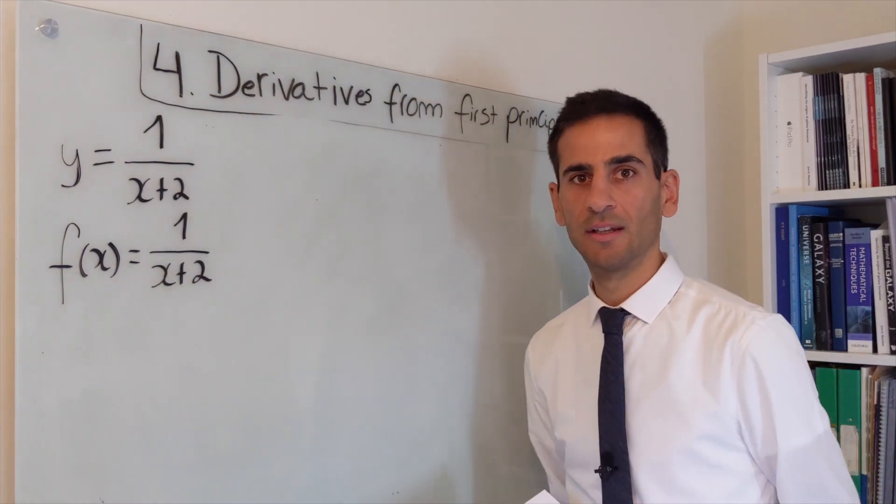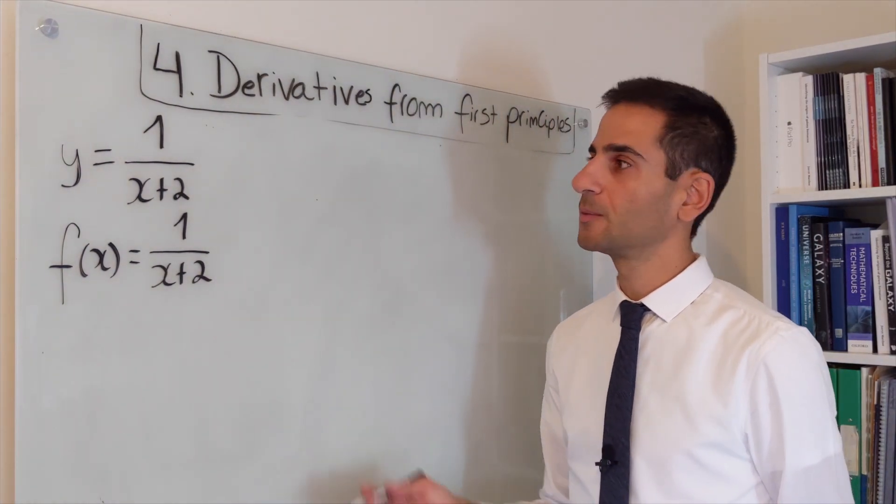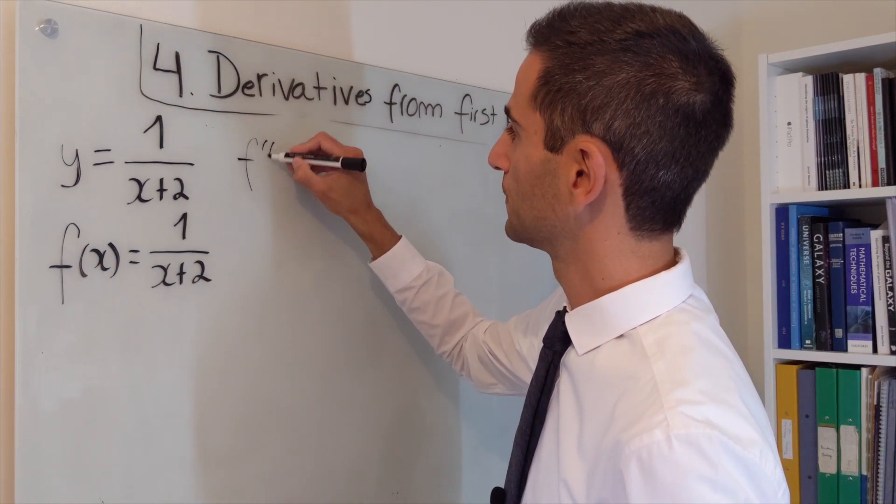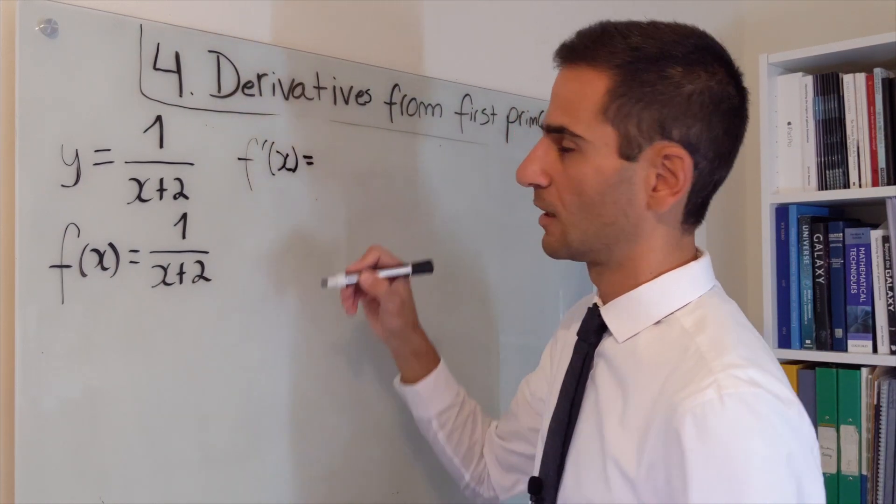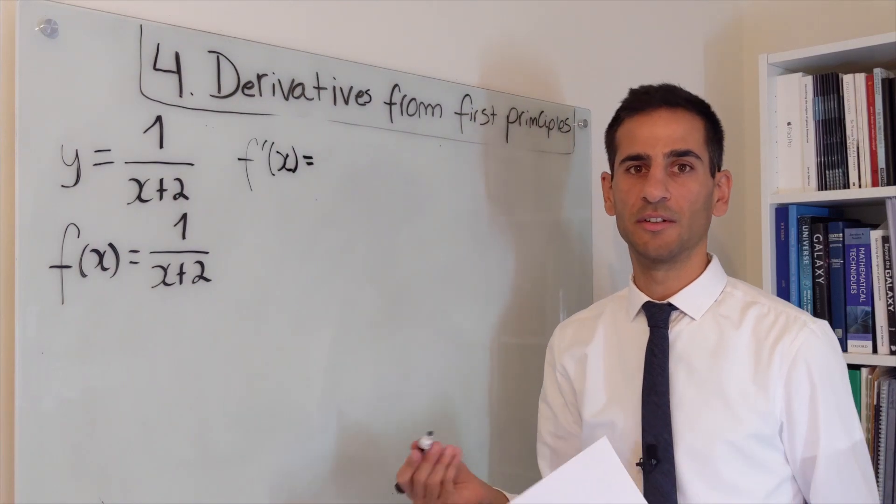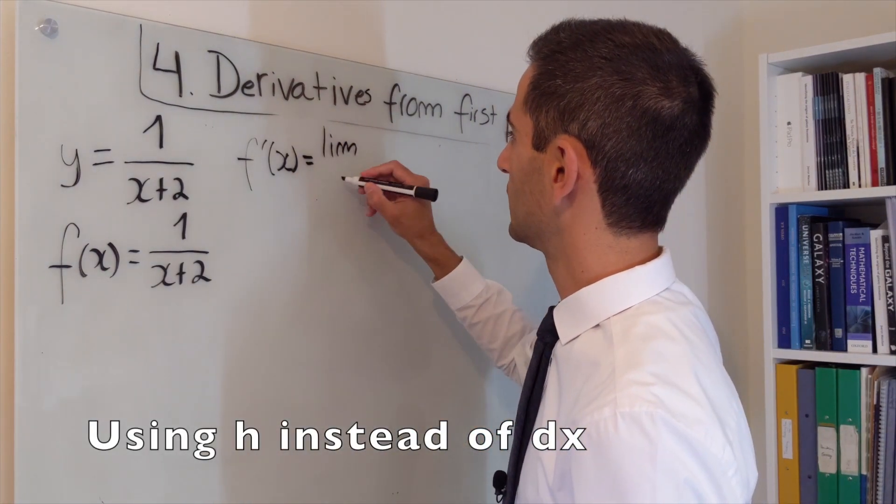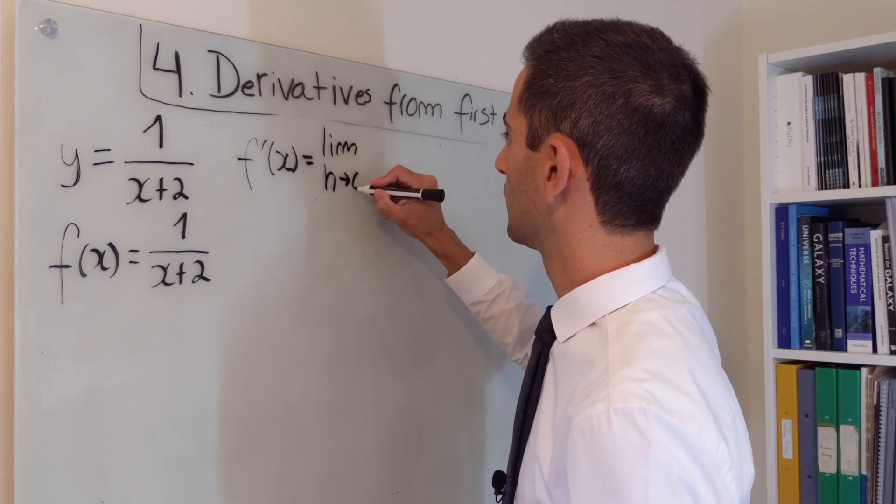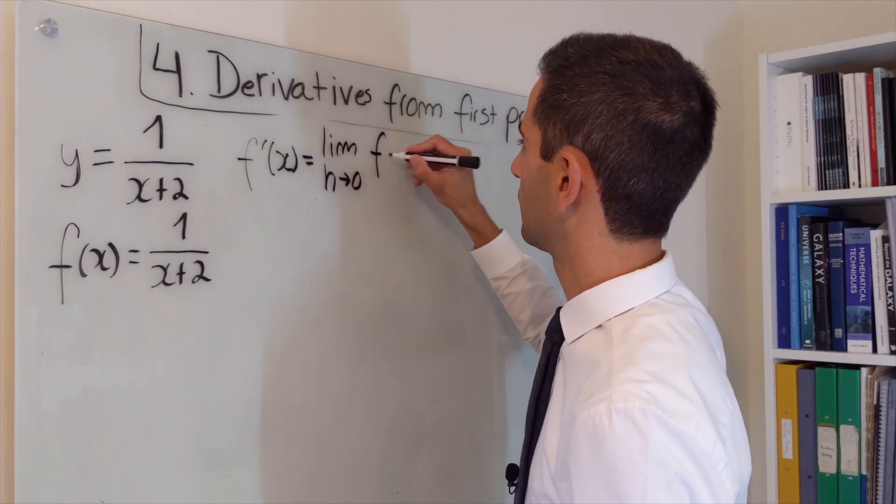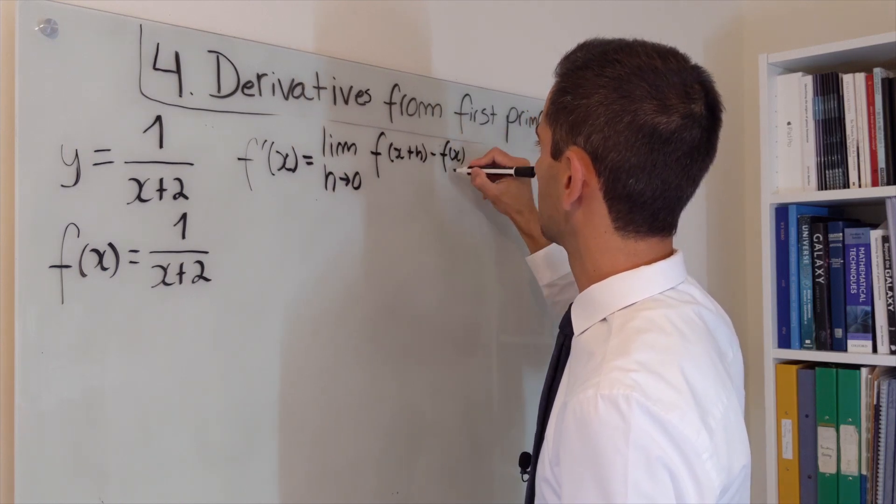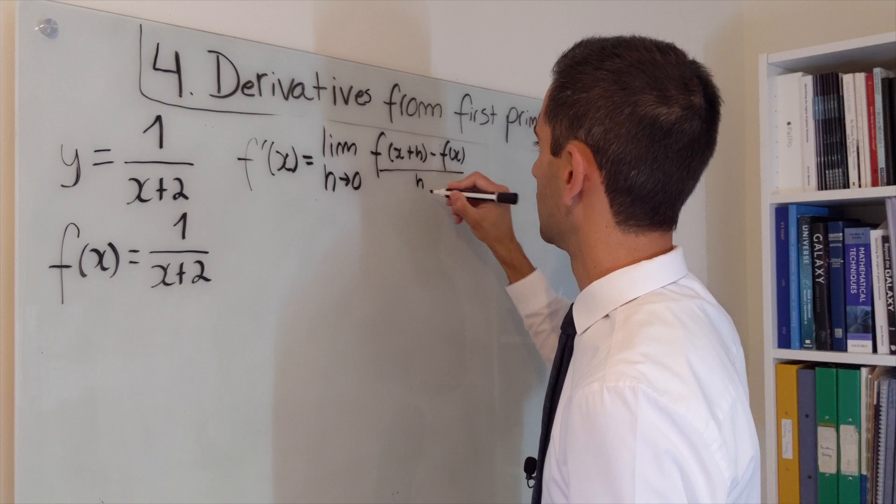If we want to calculate the derivative from first principles, we want to calculate this limit. And I'm going to use h just to demonstrate that you can use other notations. So it is the limit when h goes to 0 of f of x plus h minus f of x over h.